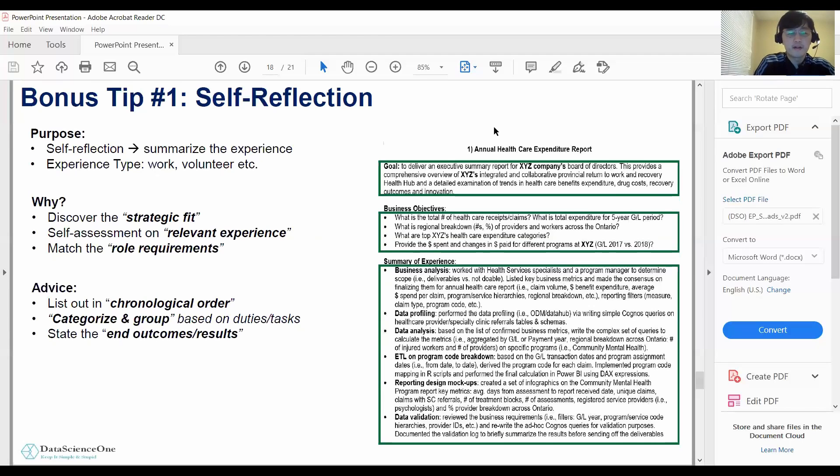So basically my final advice would be: list out your work experience in chronological order. Second, categorize and group your experience based on the duties or the tasks that you accomplished in the past. And third, state out the end outcome or the achievement of the result based on your work experience.